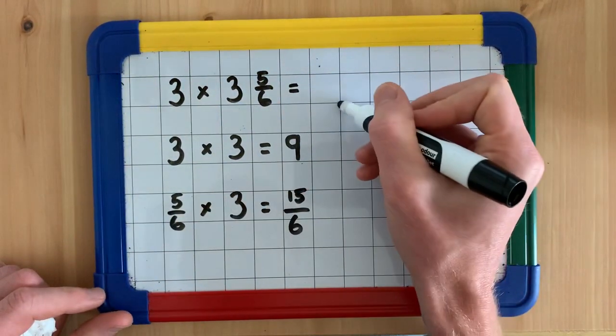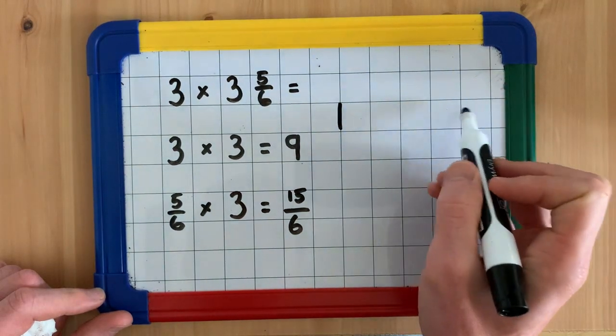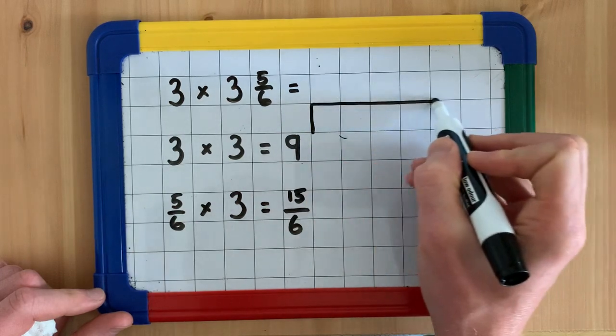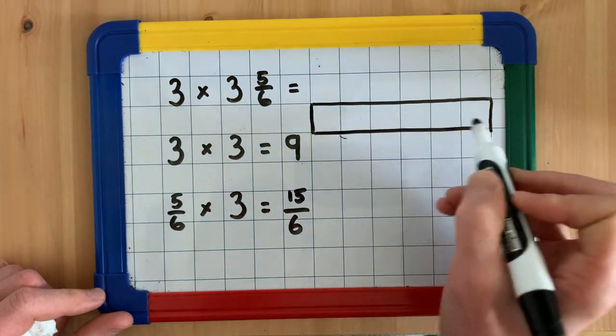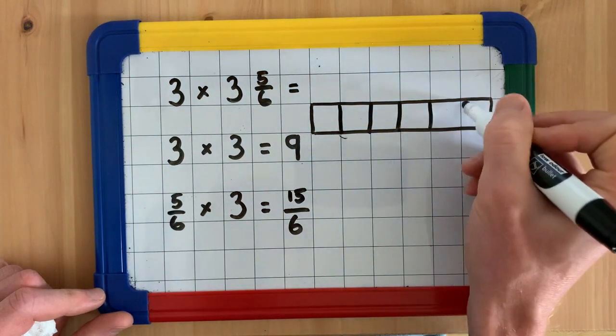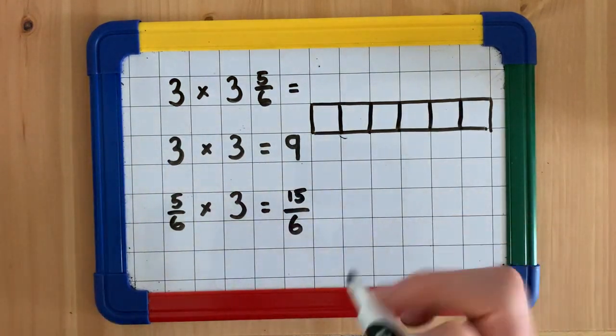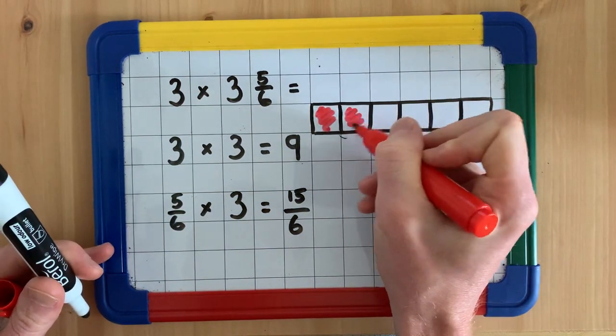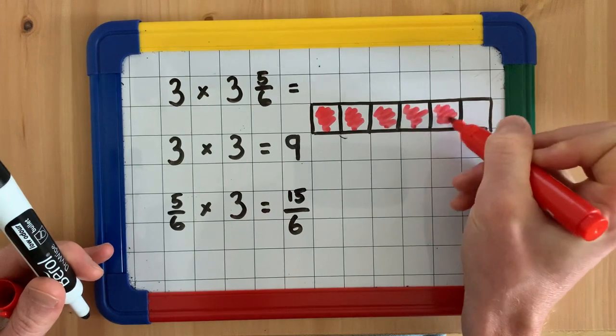So if we've got 5/6, 1, 2, 3, 4, 5, 6. So if that's our whole and we split it into 1, 2, 3, 4, 5, 6 equal parts and we select 1, 2, 3, 4, 5 of them, we have 5/6.